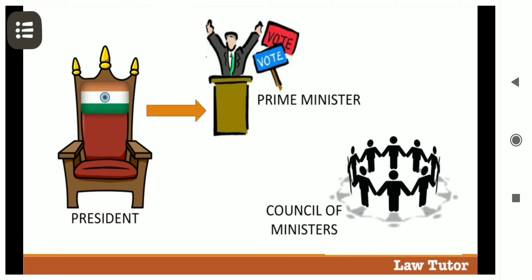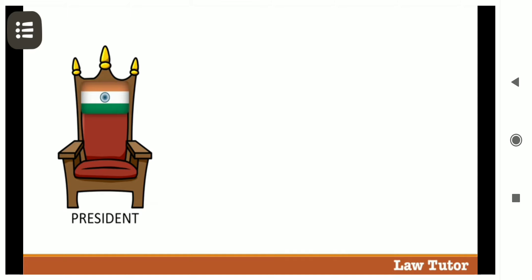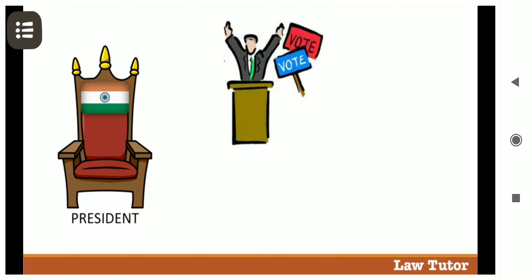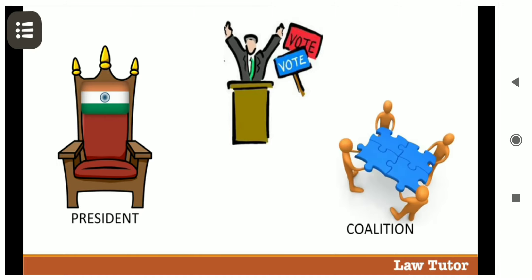The President appoints the Prime Minister, and on the advice of the Prime Minister, the President appoints the Council of Ministers. As per convention, the leader of the majority party in the Legislature is invited by the President to form the government. In case there is no single largest party, the leader of the coalition is appointed as the Prime Minister. Basically, the President should appoint a person who is in a position to win the confidence of the majority in that House.